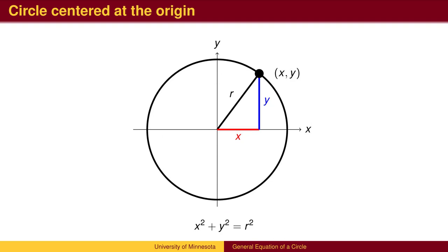In general, the equation of a circle centered at the origin is x squared plus y squared equals r squared.